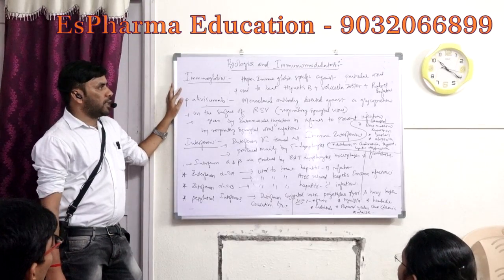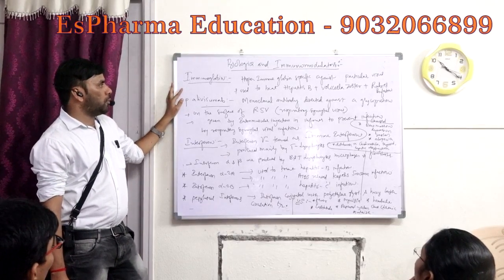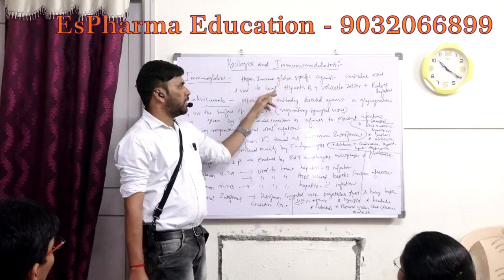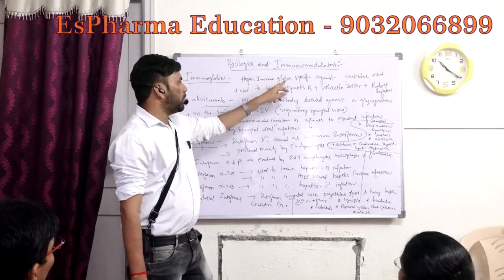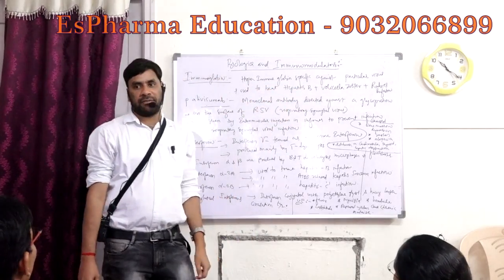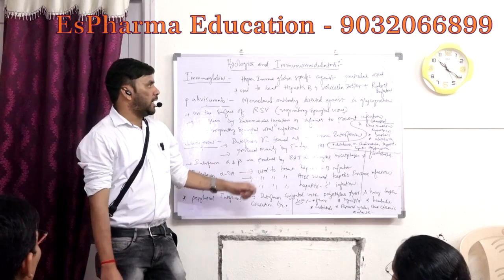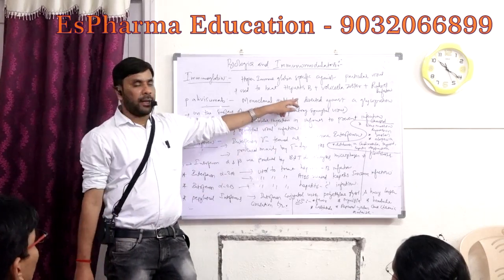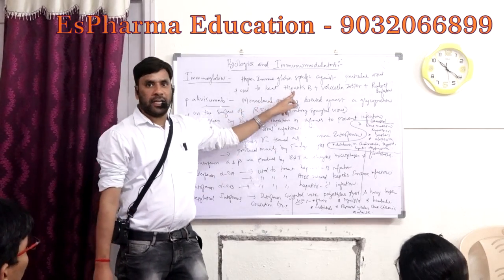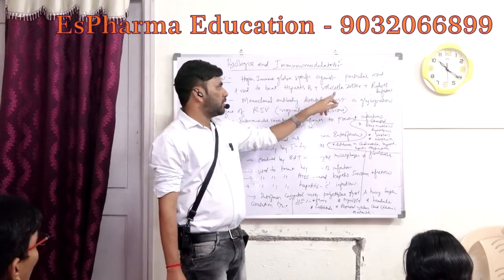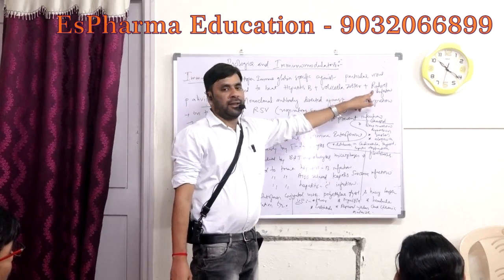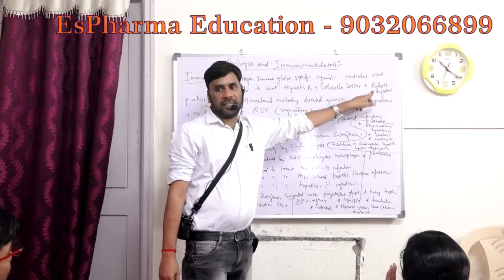The biologics and immunomodulators — the immunoglobulins. The first one is hyperimmunoglobulin. This hyperimmunoglobulin is specific; it is used to treat three types of infection: Hepatitis B infection, Varicella-Zoster infection, and Rabies infection.